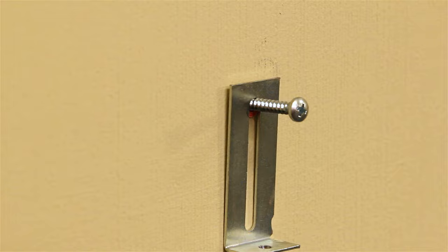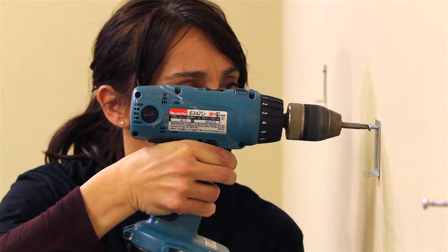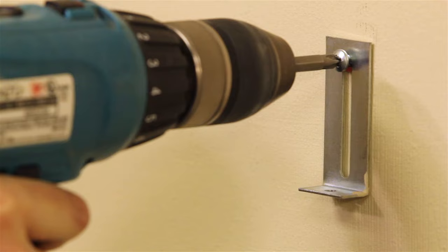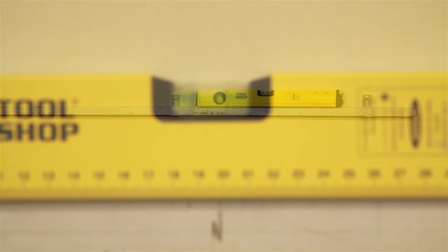Using the 1¼ inch screws provided, attach the bottom mounting clips to the wall. After all the mounting clips are installed, check to make sure the clips are level.